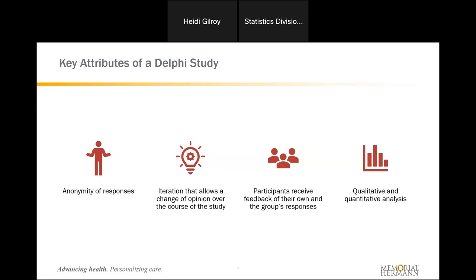Another key attribute is that participants receive feedback on their own responses and the group's responses as well. They need to be able to see what they answered on the questions and then see the compilation of everyone else's answers, so they can start to look at where they agree with everyone else and where they see it differently. The other key attribute is that there's both qualitative and quantitative analysis — qualitative in thinking about the experiences and insights of others, and quantitative to help measure the consensus piece.